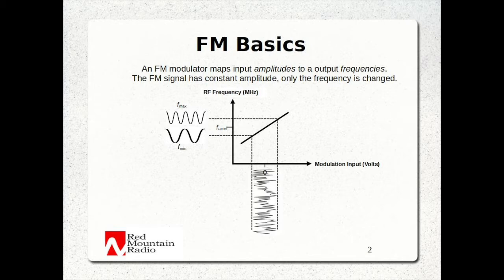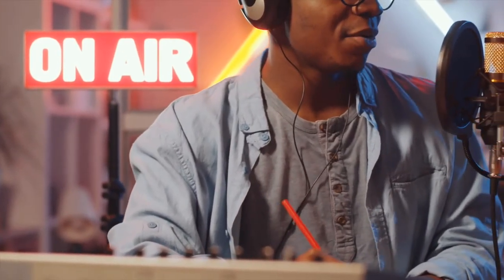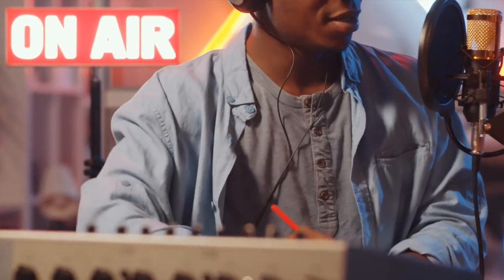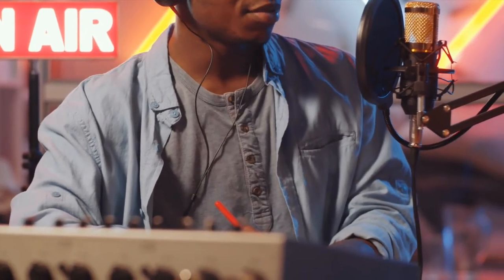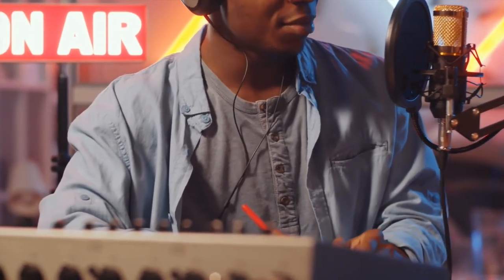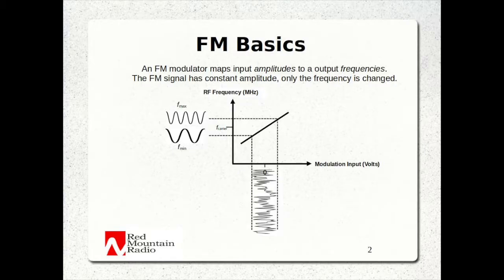The RF signal has a constant amplitude — only the frequency is changed. An FM receiver works in reverse, mapping the received frequencies back to amplitudes, thereby recovering the original message. The maximum amount of frequency deviation from the carrier is important for two reasons. First, in FM radio broadcast, it determines the overall level of sound that you hear. FM radio stations deliver just about the same maximum volume because a standard is set for deviation required by regulations. And second, since frequency modulation maps amplitude to frequency, if no limits were set on deviation, one station's frequency would deviate enough to overlap with an adjacent channel.